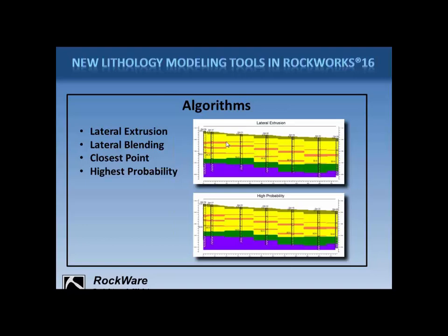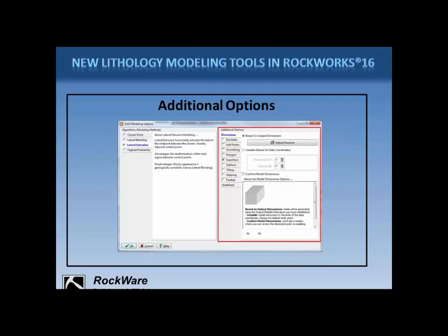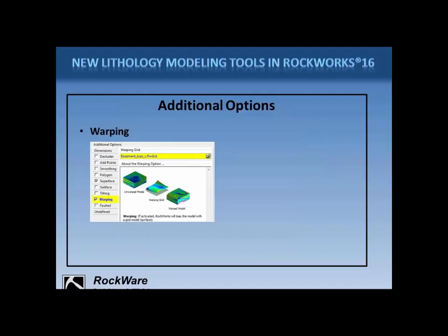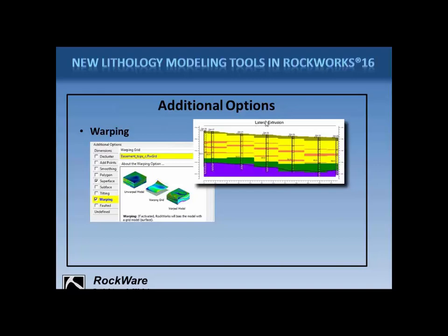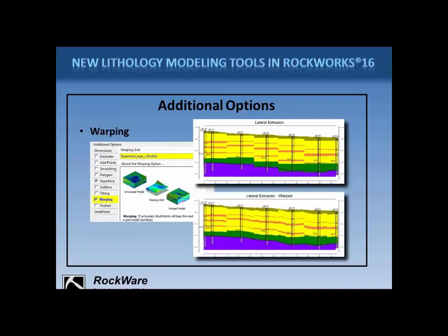Now let's look at the additional options you can apply, available on the right side of the solid modeling options window. The first option is warping — a process whereby instead of being completely horizontally biased, the lithologic extrusion will follow the contours of a warping grid, whose name is defined here. In this example, these disconnected and horizontally oriented blocks might look more connected. I did a separate webinar which discussed using post-modeling manipulation tools to merge warped zones with non-warped zones, so that you could, for example, warp the middle section and leave the upper soil alone. It is definitely possible to avoid these warping effects at the top.